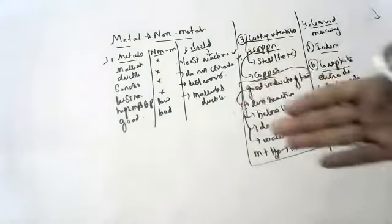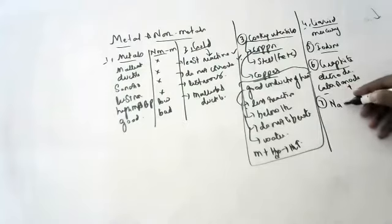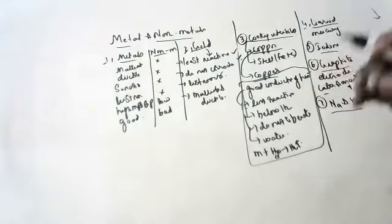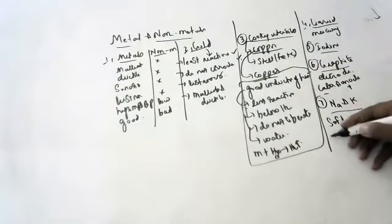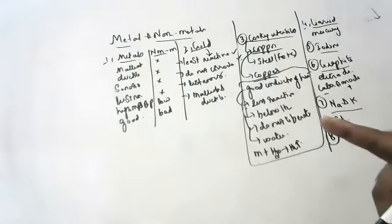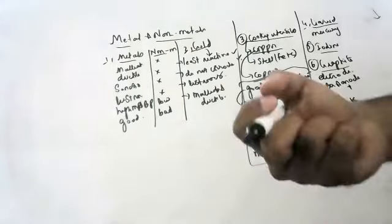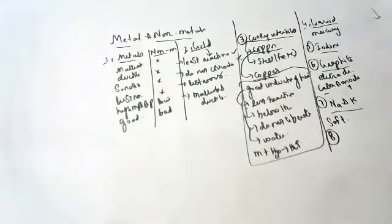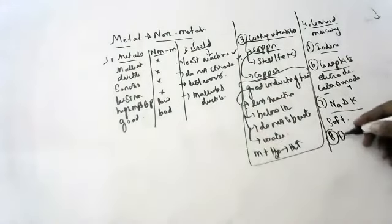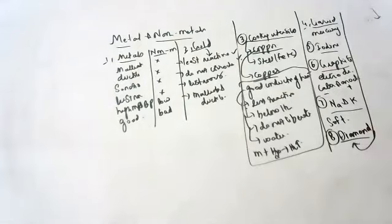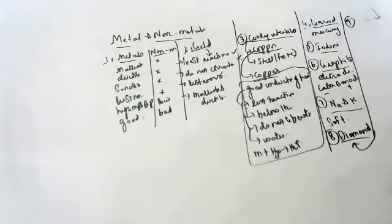Metals are generally hard, but name two soft metals that can be cut with a knife. Sodium and potassium are so soft that you can cut them with a knife. Generally, solid non-metals are brittle - name the strongest non-metal. Diamond. Diamond is the hardest substance known, and ironically it is a non-metal. Graphite is brittle, but diamond is the best example of a very hard non-metal.